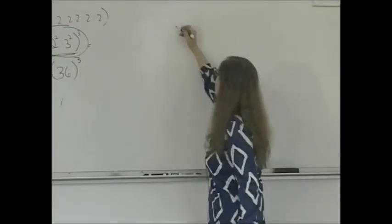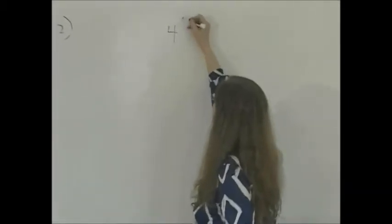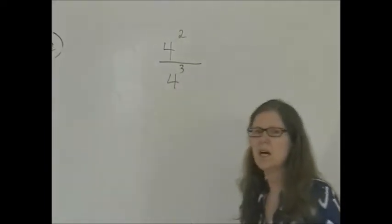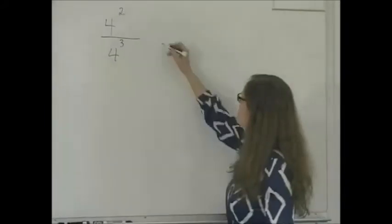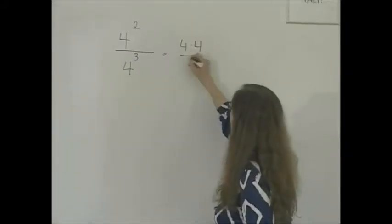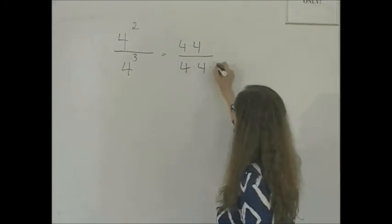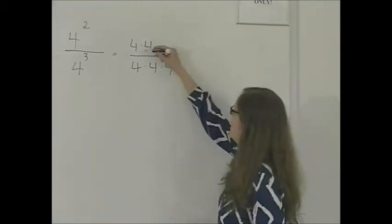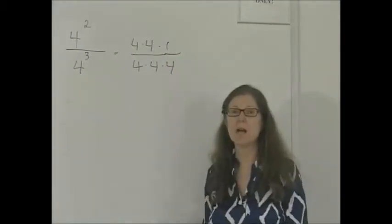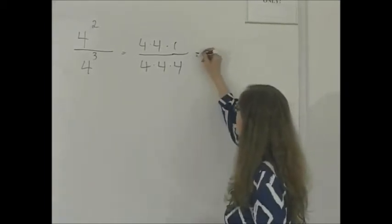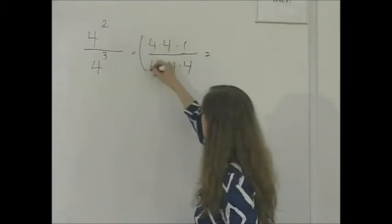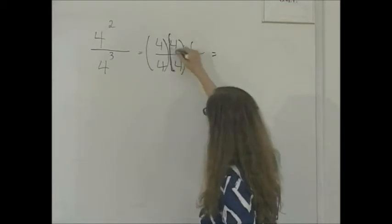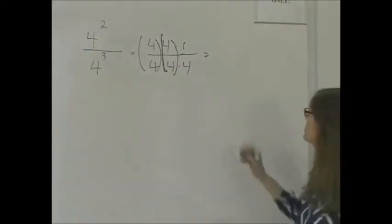Suppose I have 4 to the second power divided by 4 to the third power. Let's look at what that means. It means 4 times 4 over 4 times 4 times 4. I could say 4 times 4 is the same thing as 4 times 4 times 1. So this really could be expressed as 4 over 4 times 4 over 4, grouping these numbers, times 1 over 4. So this is just 1 fourth.